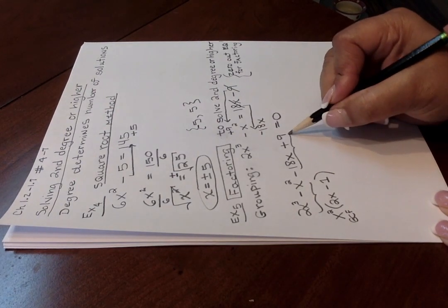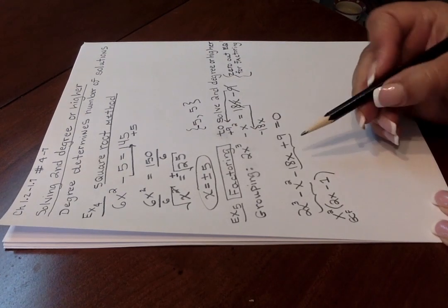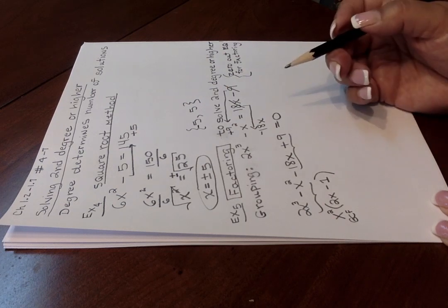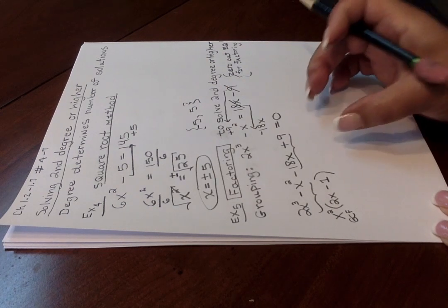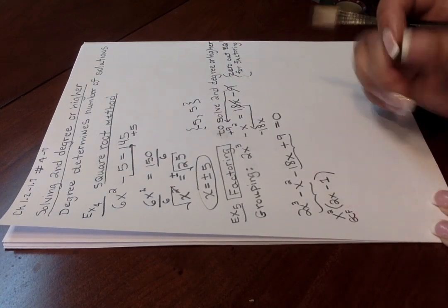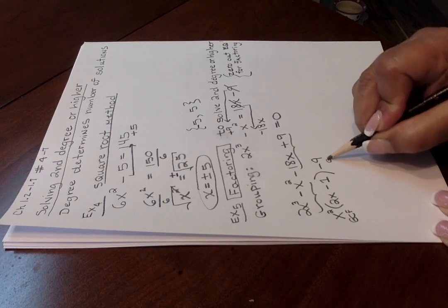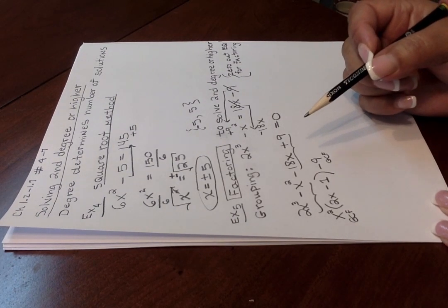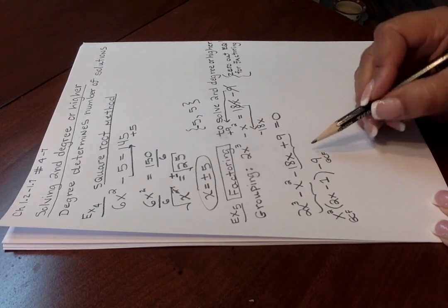Moving to the two back terms, again try to take out a GCF like you did here. What's common to these two terms is 9 or negative 9. You have to choose the right sign so that what you end up with in this parenthesis matches this one. I'm going to take out negative 9 as my second GCF, because grouping, you're taking out a GCF three times. So I took this one out first. Now I'm taking this one out of the back two terms.